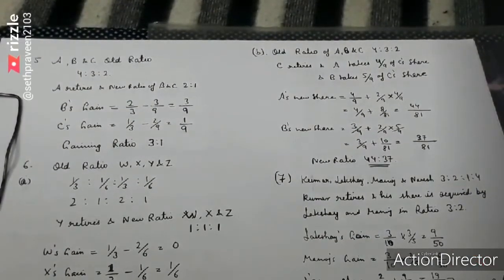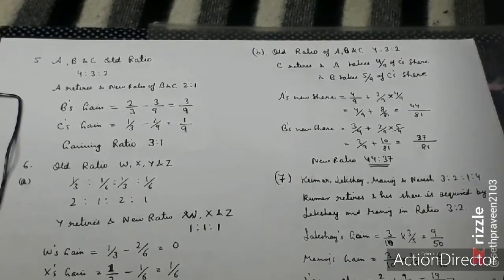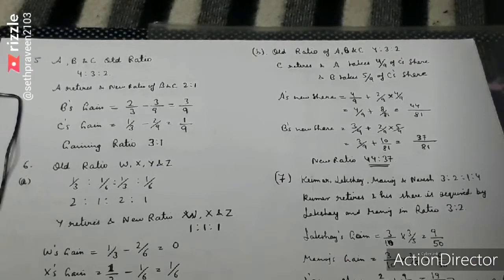In part B, ABC ratio was 4 to 3 to 2. C retired with 2 by 9 share. A and B gain in the ratio 4 to 3 from the old ratio. So A gains 2 by 9 times 4 by 7, which is 8 by 63.